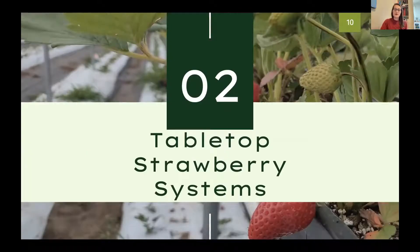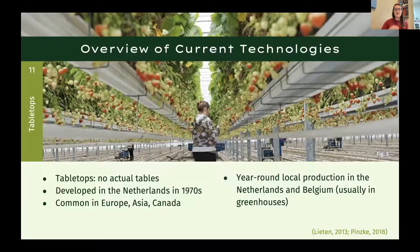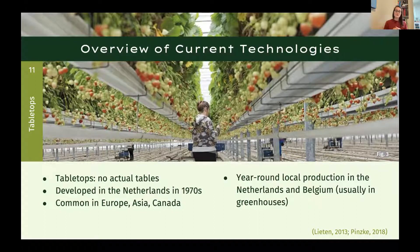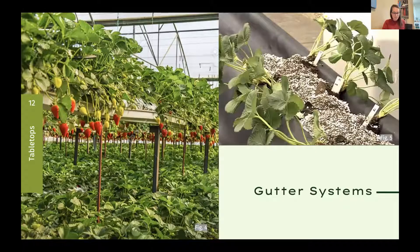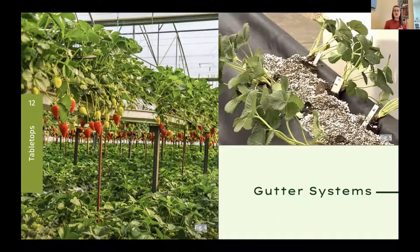Tabletop strawberry systems are a potentially innovative way to get around many of those challenges. Importantly, 'tabletop' doesn't necessarily mean tables are involved — it generally refers to growing at table height. This hydroponic system was developed in the Netherlands in the 1970s and has since spread across northern Europe, and is now common in Asia and Canada. It allows for year-round local production, particularly in the Netherlands and Belgium in greenhouses, but increasingly in outdoor production as well.